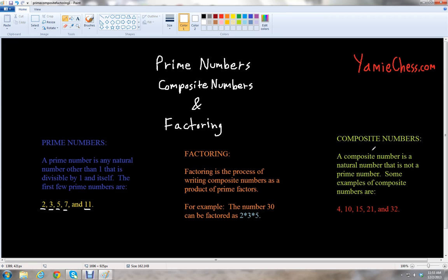Now let's learn about composite numbers. They're kind of the opposite of prime numbers. A composite number is a natural number that is not a prime number. Some examples of composite numbers are 4, 10, 15, 21, and 32. All the even numbers besides 2 are composite numbers, and then there are some odd numbers that are also composite numbers.